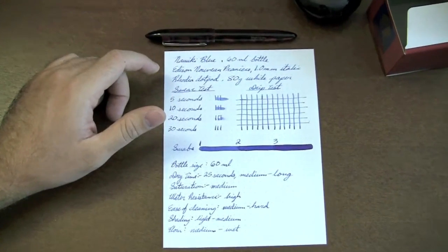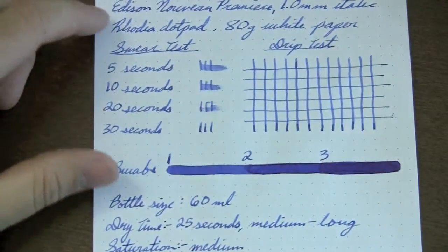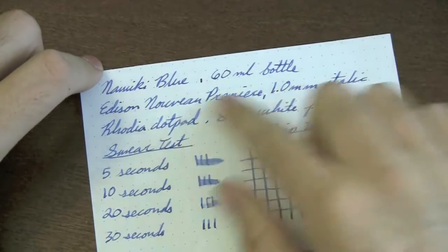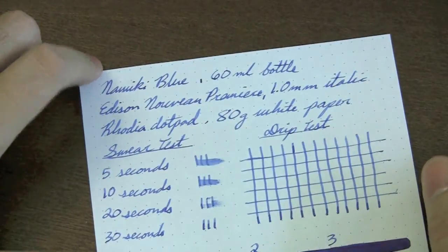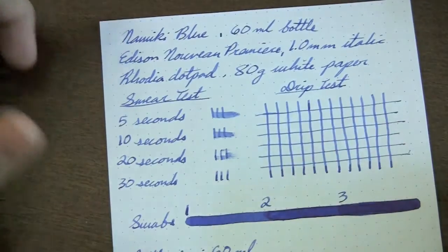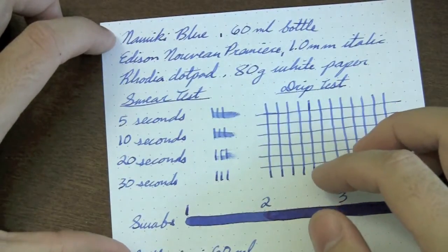Even still, it's a nice dark blue ink color. I'm going to zoom in a little bit here and show you what's going on. The Namiki Blue is a 60 ml bottle. I just showed you that. The pen, Rhodia dot pad, 80 gram paper. That's kind of my standard.